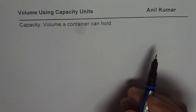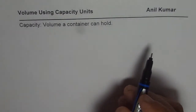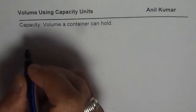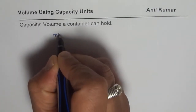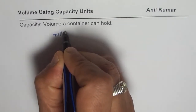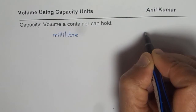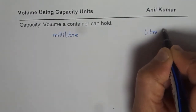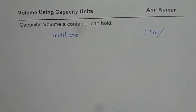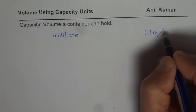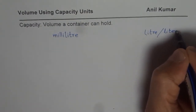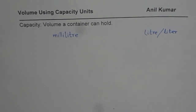While we work on volume, there are two particular units which are very popular. One is called milliliters — let me write down milliliters: M-I-L-L-I-L-I-T-R-E — or liters: L-I-T-R-E. These liters could be spelled as L-I-T-R-E or L-I-T-E-R. Both are correct. Sometimes you will find one spelling, sometimes the other, but both are the correct spellings of liter.